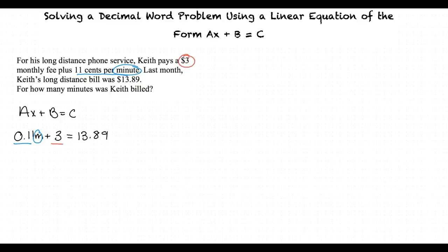all of which equals $13.89, the total amount that Keith was charged for at the end of the month.